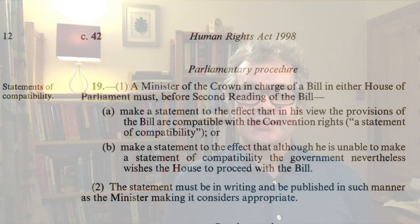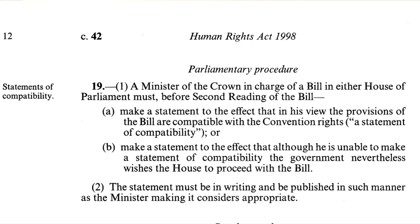As you may have guessed from the words 'under Section 19(1)(a) of the Human Rights Act', this statement was not included in the bill because Priti Patel was moved personally to share her views about the human rights implications of the legislation. To see why it was made, let's take a look at Section 19 of the Human Rights Act 1998. It tells us that a Minister of the Crown in charge of a bill in either House of Parliament must, before the second reading of the bill: (a) make a statement to the effect that, in his view, the provisions of the bill are compatible with the convention rights — a statement of compatibility, it's called — or (b) make a statement to the effect that, although he is unable to make a statement of compatibility, the government nevertheless wishes the House to proceed with the bill.